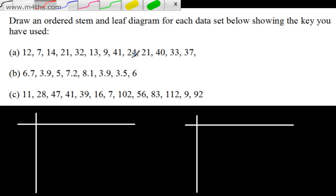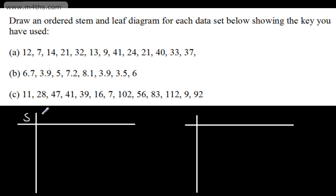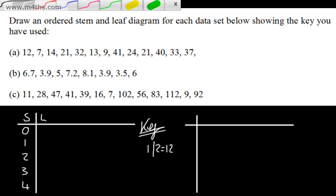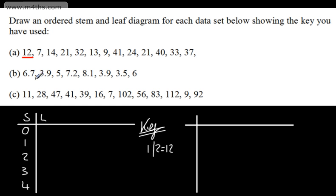We're starting with 7 and going up to 41. For the stem I'm going to choose tens, and for the leaf we're going to have units. Starting at 7 — that's 0 tens and 7 units — going right the way up through 0, 1, 2, 3, 4. Let's write a key: 1/2 will be equal to 12. Now I'll go along and put these in the stem and leaf diagram.